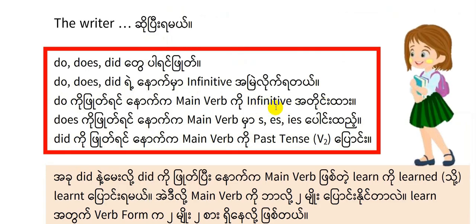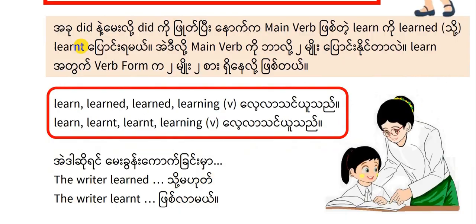Then the writer says... learn's, learn's. Did, did — 'did' is the past tense. Past tense is the past tense. Did, learned. We spell it as 'learnt'. Learn is a word form: learn, learned, learned, learning — a verb.